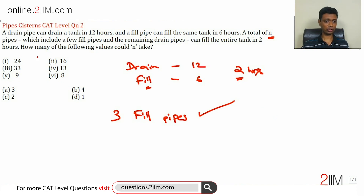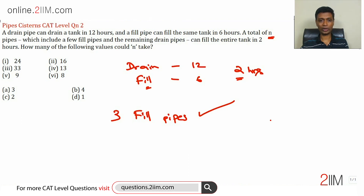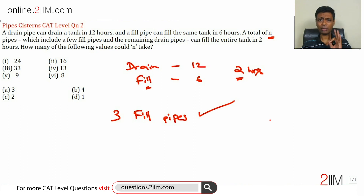Unfortunately, three is not part of the choices. So, how many of the following values can n take? We know n could be three — three fill pipes and no drain pipes — and we know we need a minimum of three fill pipes to fill this tank even if there are no drain pipes.